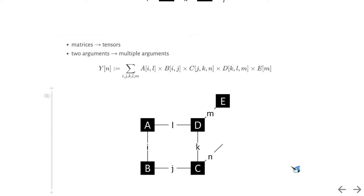The connected leg means the dimensions summed over in the matrix multiplication, where the open legs are remained in the output. If we generalize matrices to tensors, two arguments to multiple arguments, we will get a tensor network. Here,